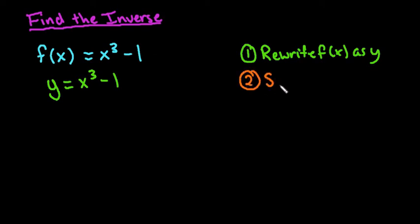what we want to do is actually switch the location of x and y. Remember an inverse function, what it does is the x coordinates become the y and the y coordinates become x, so they actually switch places. So we have x equals y cubed minus one.